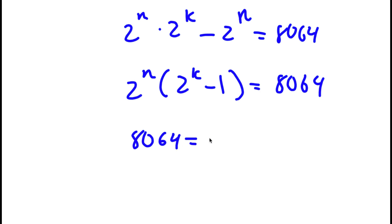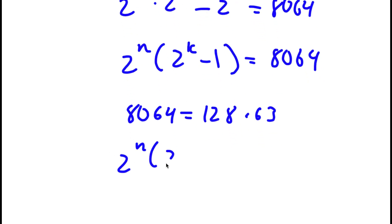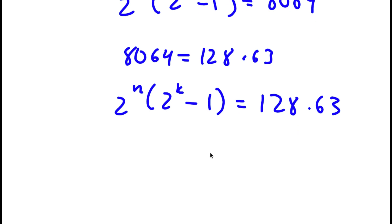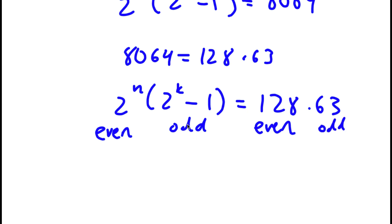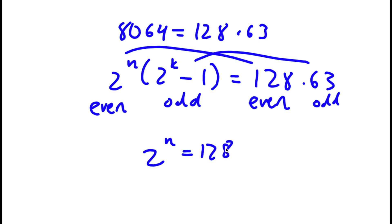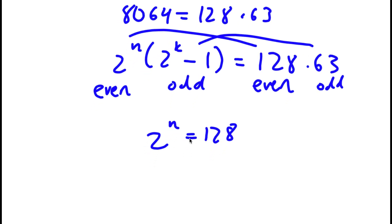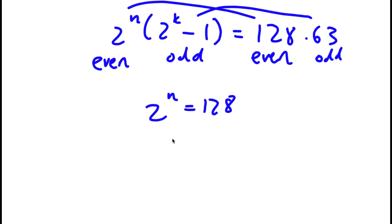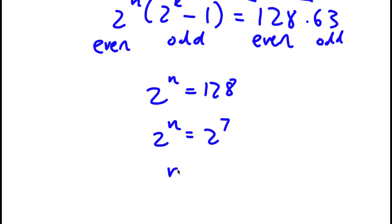Now 8,064 is simply equal to 128 times 63. So I have 2 to the power of n times 2 to the power of k minus 1 equals 128 times 63. Notice that 2 to the power of n is an even number, and 2 to the power of k minus 1 is odd. Similarly, 128 is even and 63 is odd. So I can set the even parts equal: 2 to the power of n equals 128, which is 2 to the power of 7, meaning n equals 7.